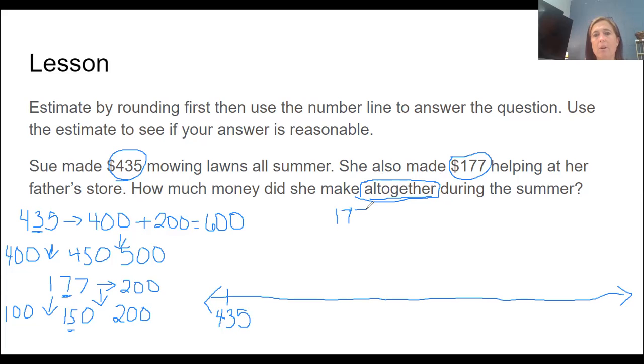Because our equation is 435 plus 177. So 435, let's start with the hundreds place. 435 plus 100 is 535.